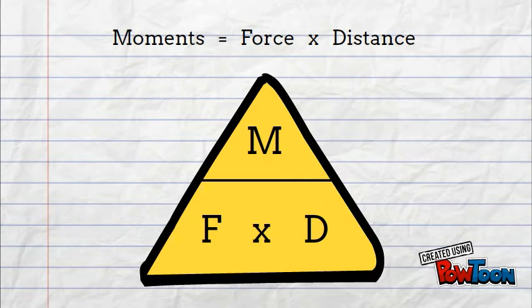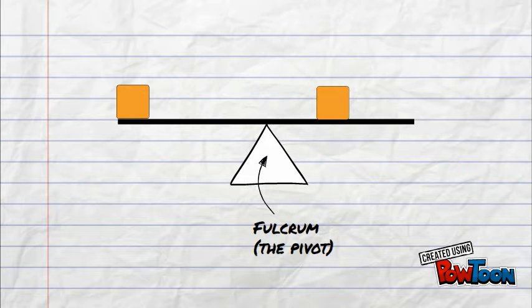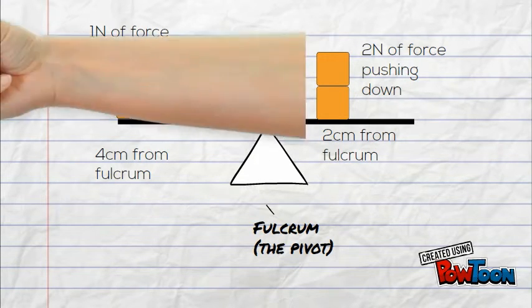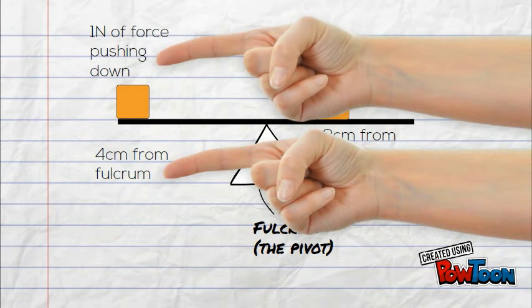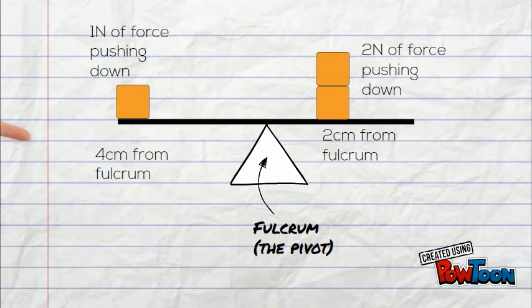Here's a worked example. Here's a beam to balance some things on, and here's a fulcrum. We'll put a block on the left and two blocks on the right. Here's some data — that looks scary, doesn't it? Now stay calm and read it carefully. There is one newton pushing down on the left, four centimetres from the fulcrum. There are two newtons pushing down on the right, two centimetres from the fulcrum.